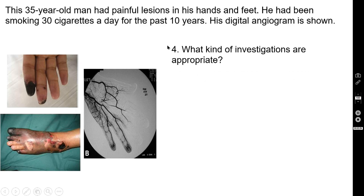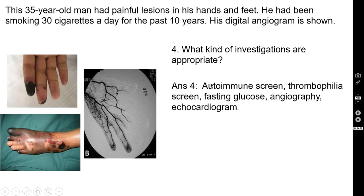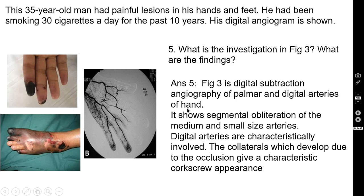Question number four: what kind of investigations are appropriate in this case? You can do an autoimmune screen, thrombophilia screen, fasting glucose, angiography, and echocardiogram. These are all investigations that can be done in this patient.